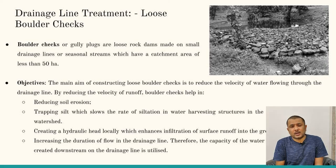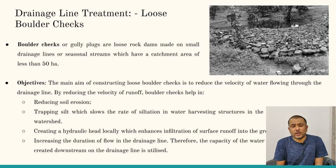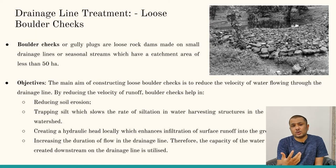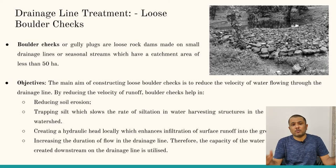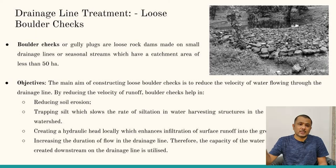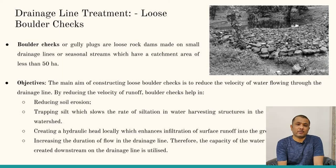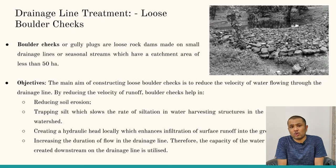Loose boulder checks are constructed for a catchment of up to 50 hectares using boulders available within the premises. Their objectives are: first, to stop or reduce soil erosion; second, to reduce the velocity of downstream flow; and third, to trap the silt carried by flowing water. Fourth, to increase the hydraulic head — the depth of retained water — creating hydrostatic pressure that drives seepage into the soil and recharges groundwater.